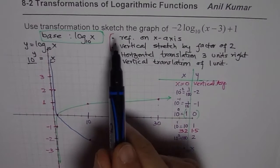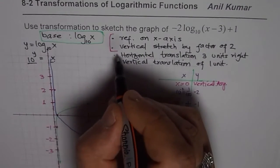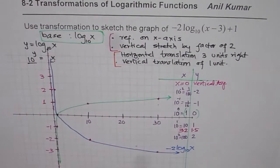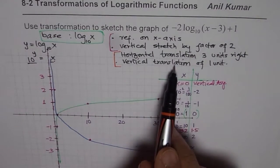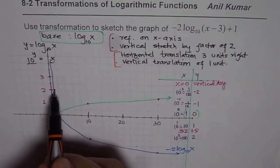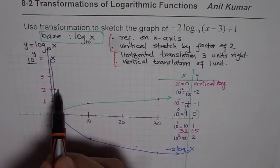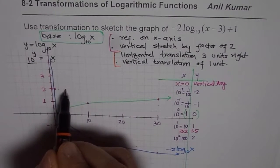Now let us incorporate the other two translations: a horizontal translation of 3 units right and a vertical translation of 1 unit up. Each point moves 3 units to the right and 1 unit up.